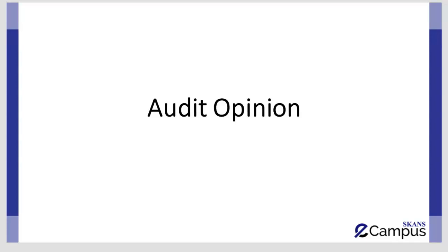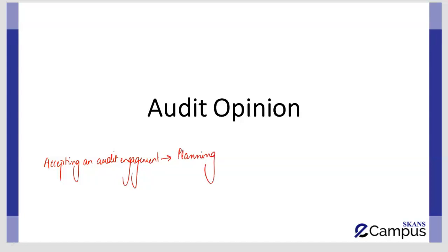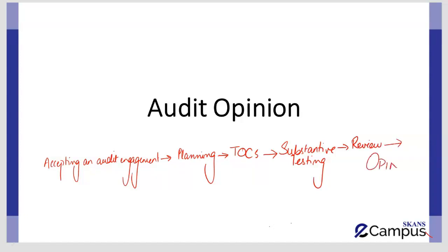We can now begin one of the most important areas of your syllabus: audit opinion. If you look at the audit process from the start, the first thing is accepting an audit engagement, at which point we studied some steps that the auditor needs to perform. Then comes planning, where an audit strategy is formulated and risk assessment is conducted. After that, controls are tested, based on which substantive testing is performed. After that, a comprehensive review of financial statements is conducted, and the next step is audit opinion, which is where we are right now in our syllabus.